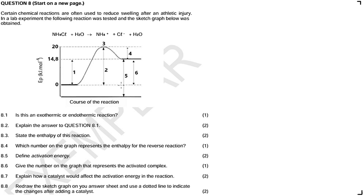Certain chemical reactions are often used to reduce swelling after an athletic injury. In a lab experiment, the following reaction was tested and the sketch graph below was obtained. What type of reaction is this? Every time we want an energy potential sketch, this question comes up — what could this reaction be?